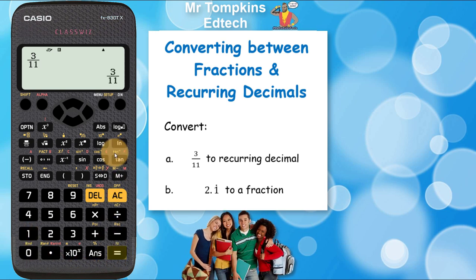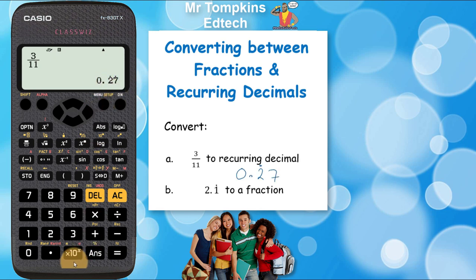Press equals, then press the symbolic-to-decimal key and it immediately turns it into a recurring decimal: 0.27 with a dot on the two and a dot on the seven. If you want to see that in expanded form, press the symbolic-to-decimal button again and it writes out 0.27272727, so you can see the pattern of the number.